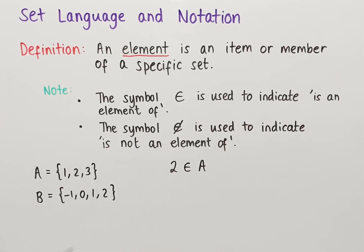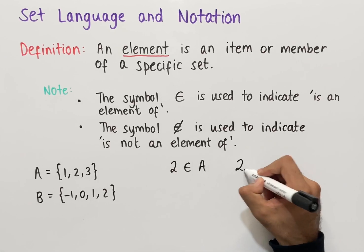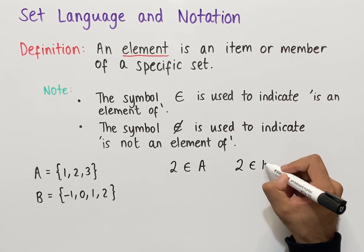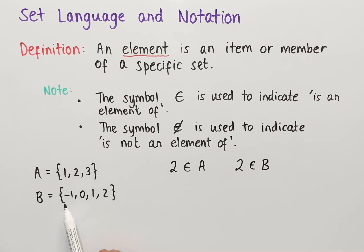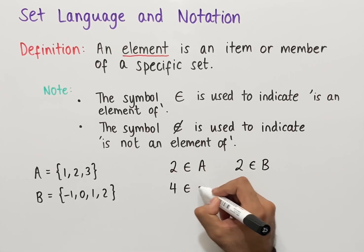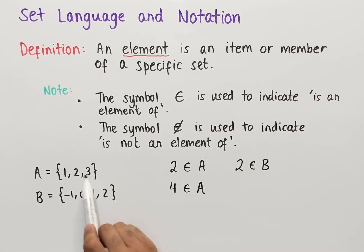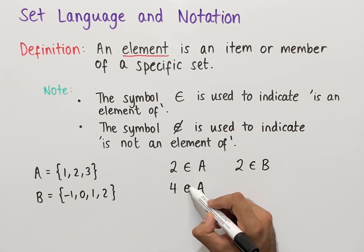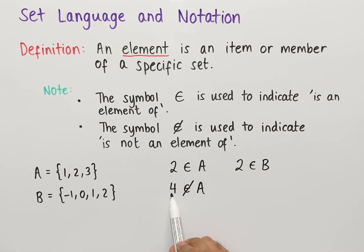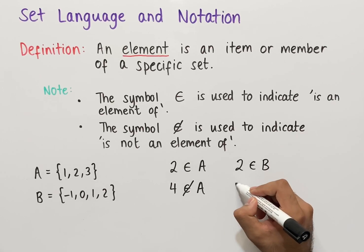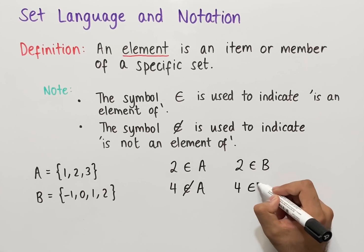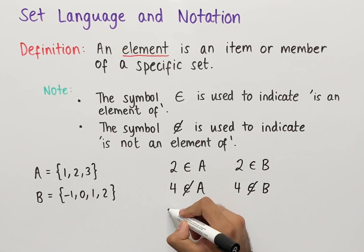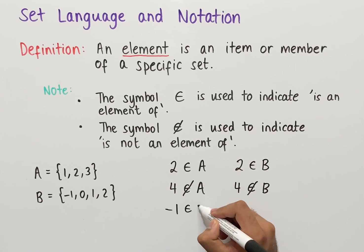Similarly, we could also say that the number two is an element of set B since two is in set B. However, we can't say that four is an element of A — this is not true since four is not within A, and so we would put a line through the epsilon to indicate that four is not an element of A. Likewise, four is not an element of B.